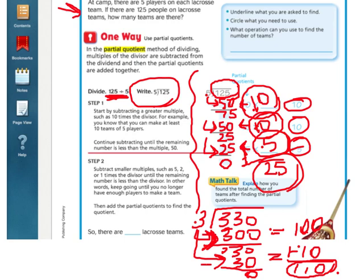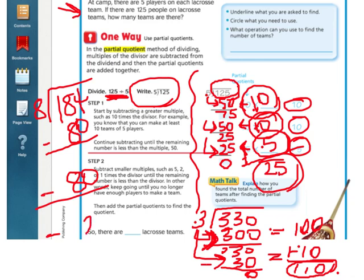I'm going to do one more. So let's pretend that I had the problem 184 divided by 8. I'm going to choose to break up that 184 into 80 and 80 and 24. So in other words, 80 plus 80 plus 24 would give me that 184. So if I do 184 minus 80, I would have 104. And then if I have 104 minus 80, I would have 24. And then 24 minus 24 is 0.